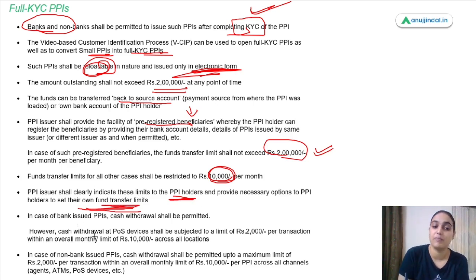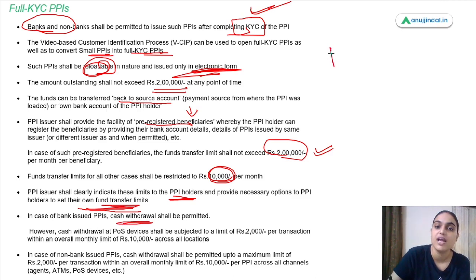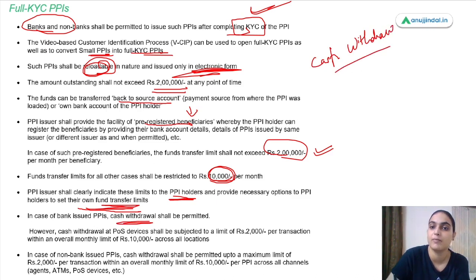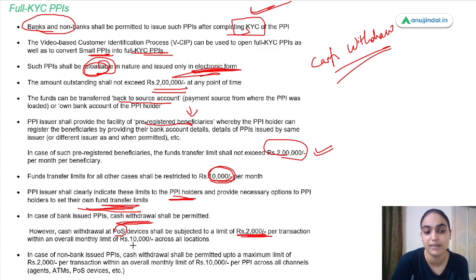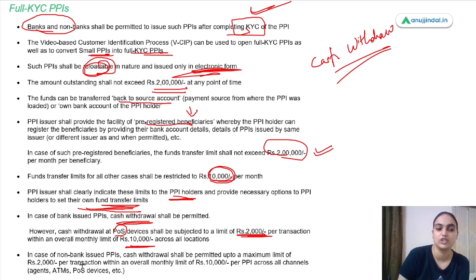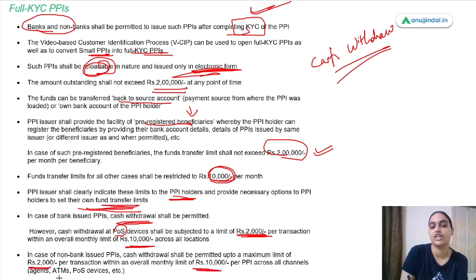PPI issuers must clearly indicate transfer limits to PPI holders and provide options for holders to set their own fund transfer limits. In the case of bank-issued PPIs, cash withdrawal is permitted — a notable feature not available with small PPIs. Cash withdrawal at point-of-sale devices shall be subject to 2,000 per transaction with an overall monthly limit of 10,000 across all locations. For non-bank issued PPIs, the cash withdrawal limit is also 2,000 per transaction and 10,000 per month across all channels — ATMs, POS devices, and agents.